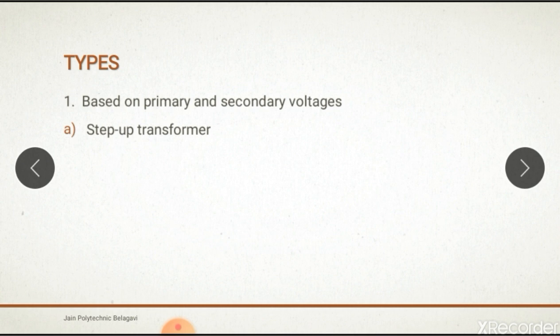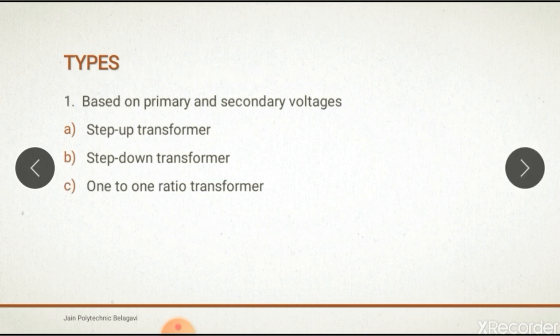Step up transformer is used to increase the voltage level. Step down transformer is used to decrease the voltage level, and one to one transformer ratio is used for same voltages on primary and secondary side.